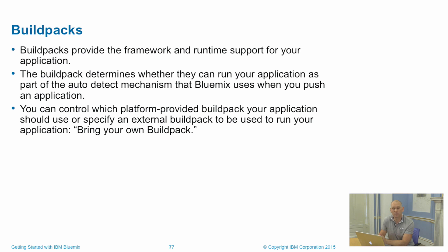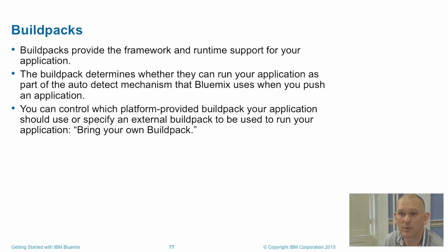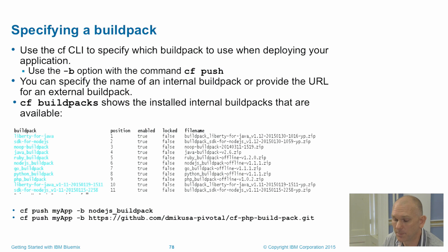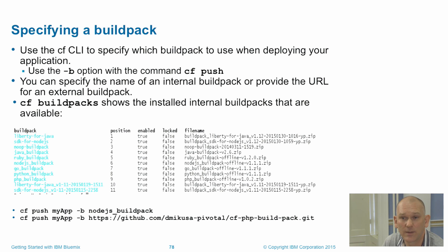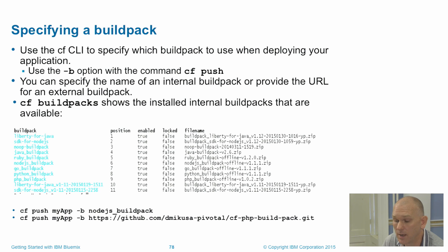You can control what build pack your application uses. You can specify an internal runtime — there may be multiple versions of the same runtime configured within your cloud environment such as Bluemix — or you can specify an external build pack. To specify the build pack, on the command line there is a -b option, and in the manifest file there is a build pack option. If you want to see what build packs are available, you can type CF buildpacks, which shows all pre-configured build packs and their position — i.e., the order in which they check whether they can run your application. On the Bluemix environment, Liberty is in the first position, followed by Node.